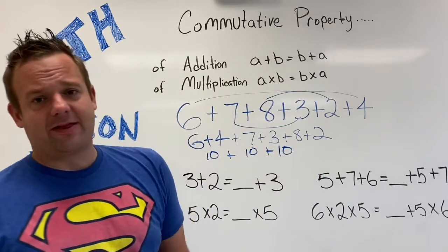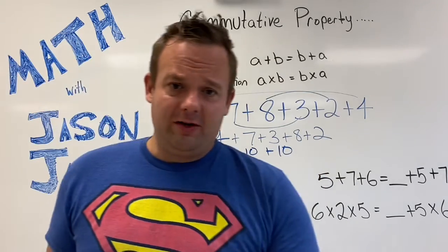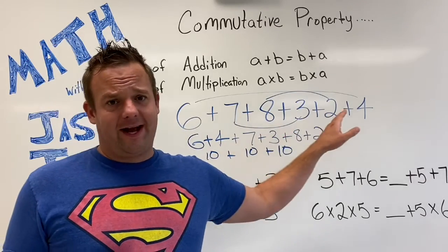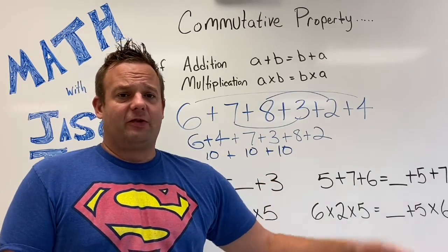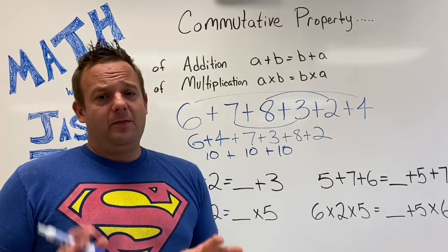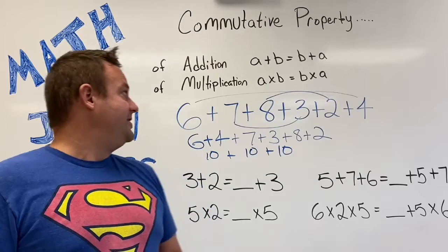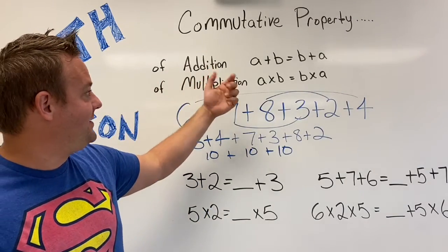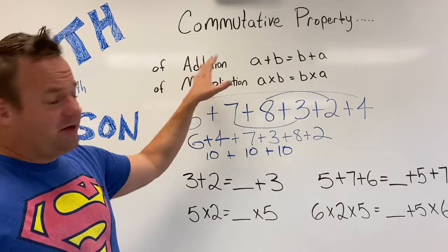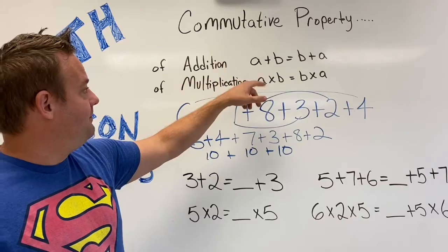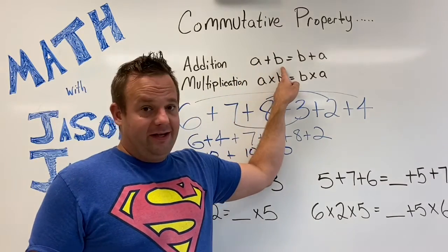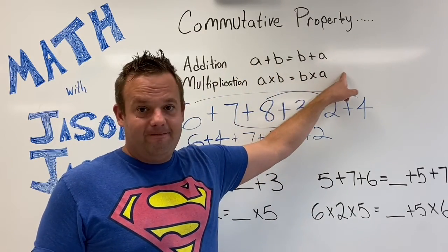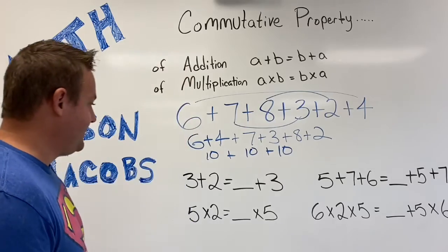Now that makes it really easy because six plus four is 10, seven plus three is 10, and eight plus two is also 10. And that's how we get 30 really, really quick instead of feeling like we have to go left to right. That is the Commutative Property of Addition, which states: as long as it's all addition, A plus B is the same as B plus A. So let's do some examples.